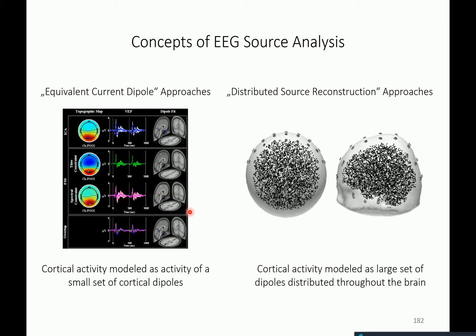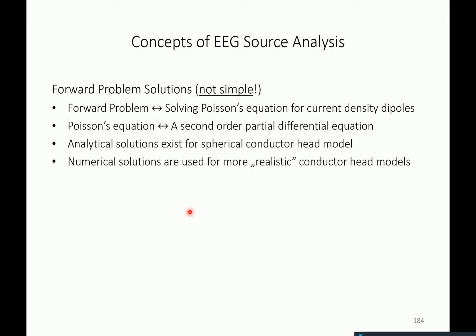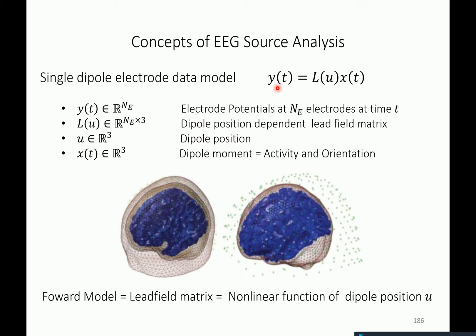We already introduced two approaches: equivalent current dipole approaches and distributed source reconstruction. In the equivalent current dipole model, for a given localization — where the dipole position u is given — the forward problem solution yields a lead field matrix that then just needs to be multiplied with the moment to get an electrical potential pattern — a potential for each electrode — at a single time point, hence the function of t.